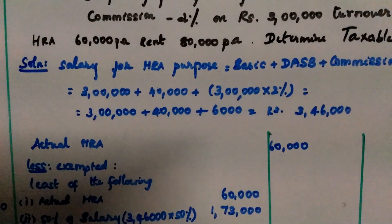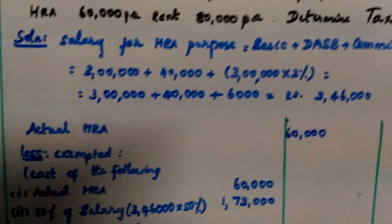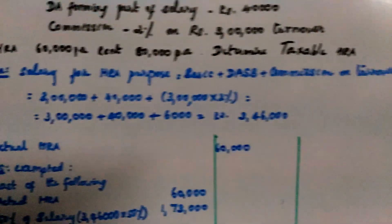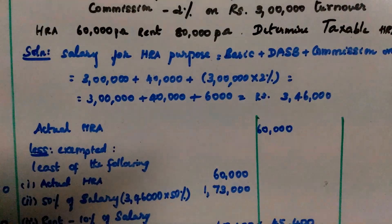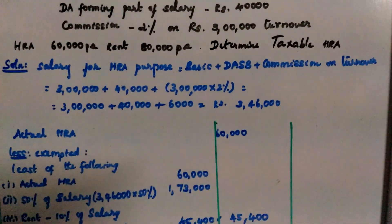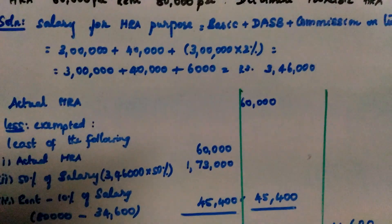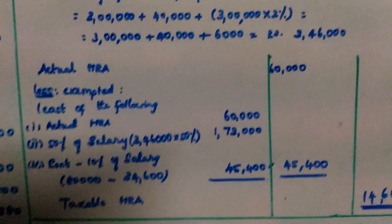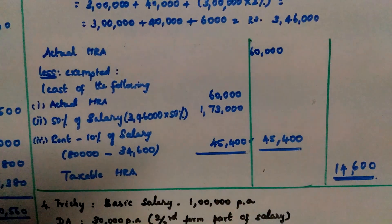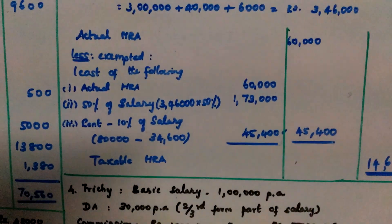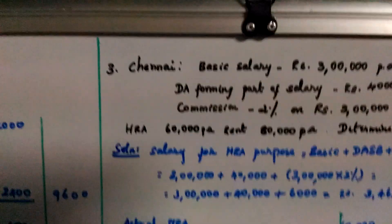HRA is Rs. 60,000 per annum. Rent paid is Rs. 80,000 per annum. Determine taxable HRA. Step 1 — Salary for HRA purpose: Basic + DA (forming part of salary) + Commission on turnover. Basic is Rs. 3 lakh. DA is Rs. 40,000. Commission at 2% on Rs. 3 lakhs turnover is Rs. 6,000. Total salary for HRA purpose is Rs. 3,46,000. Step 2 — Taxable HRA = Actual HRA less exempted. 50% of salary is Rs. 1,73,000.